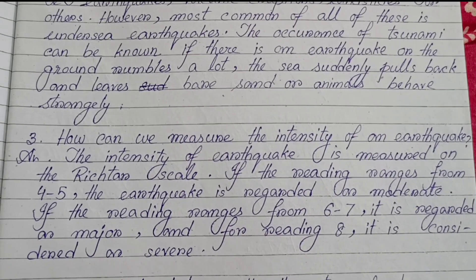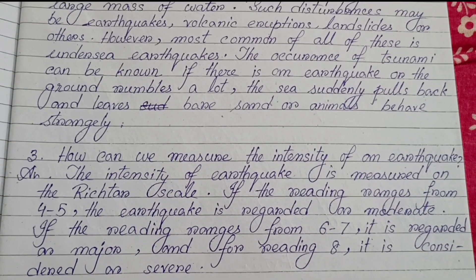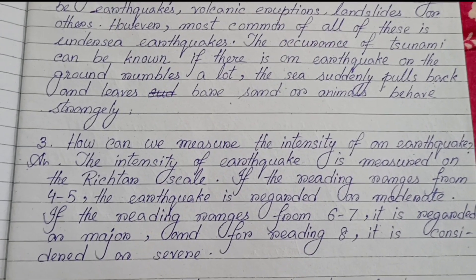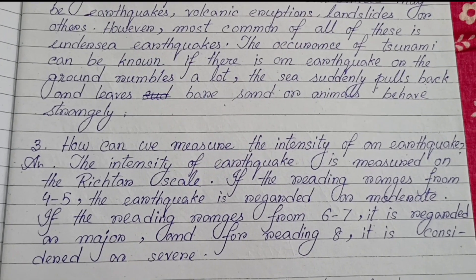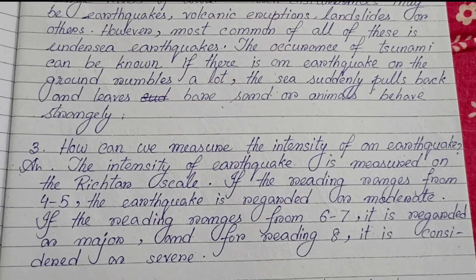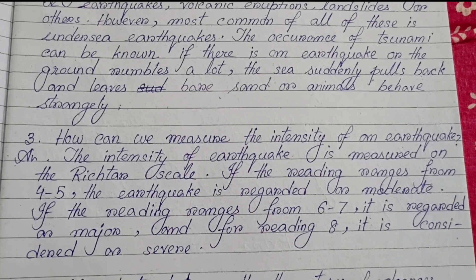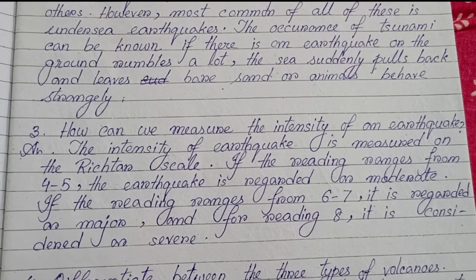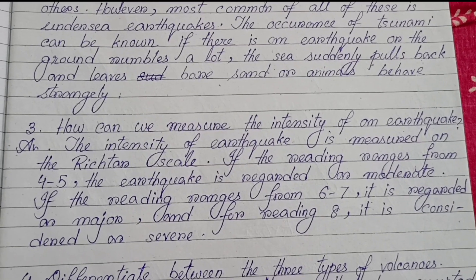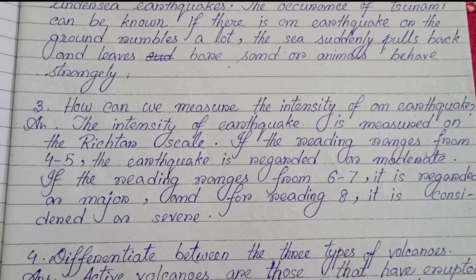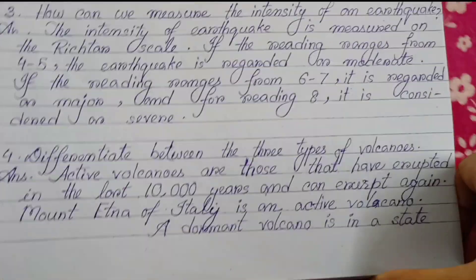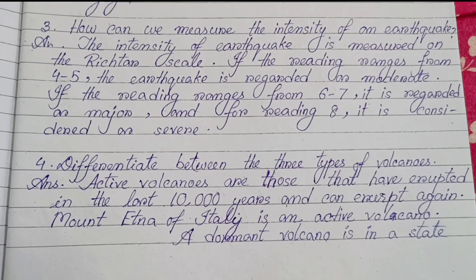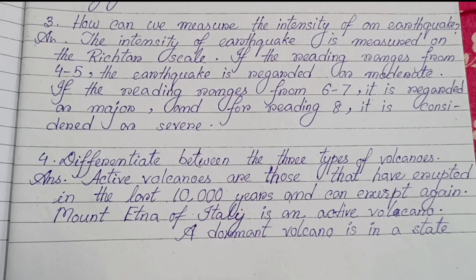Number three: How can we measure the intensity of an earthquake? The intensity of an earthquake is measured on the Richter scale. If the reading ranges from four to five, the earthquake is regarded as moderate. If the reading ranges from six to seven, it is recorded as major. For a reading of eight, it is considered severe.